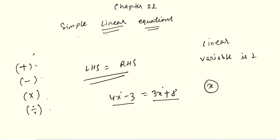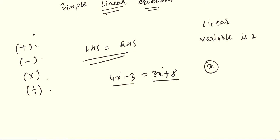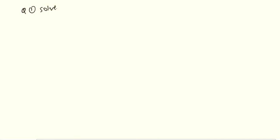So in Exercise 22A, question number 1: Solve. The first question is x plus 2 equals to 6. This question is totally based on the addition rule. As you can see, x plus 2 equals to 6. Our x is the only variable here, and we want to find the value of x.